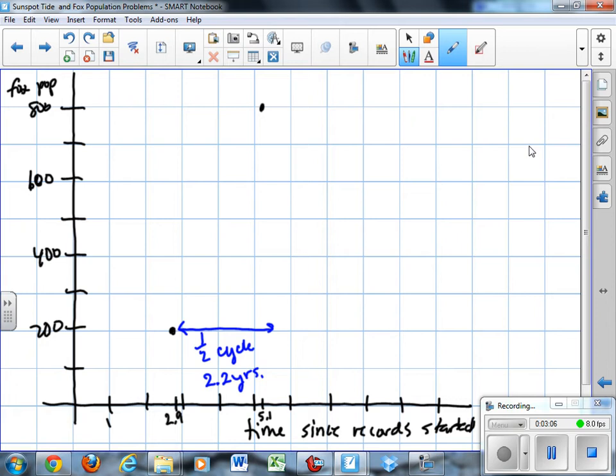Our next low cycle, our next low point, would be 2.2 more years. So if we add 2.2 to 5.1, we'd get 7.3. And we'd have our next low point.